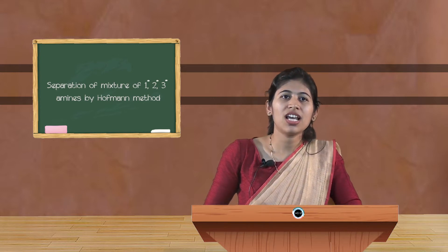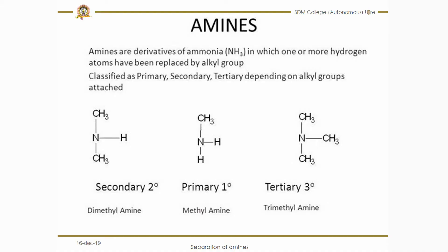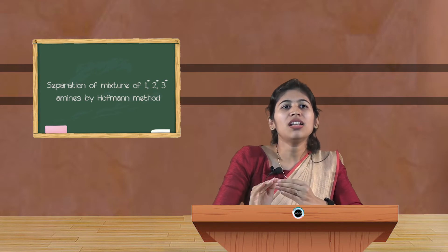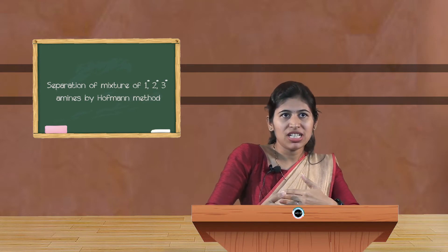Before explaining that, let us see what amines are and what the difference is between primary, secondary, and tertiary amines. Amines are derivatives of ammonia (NH₃), in which one or more hydrogen atoms have been replaced by an alkyl group. If one alkyl group is replaced it is a primary amine, if two are replaced it is a secondary amine, and if three hydrogens are replaced by three alkyl groups it is a tertiary amine.